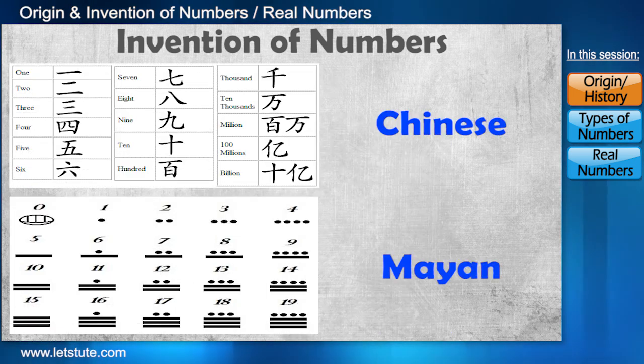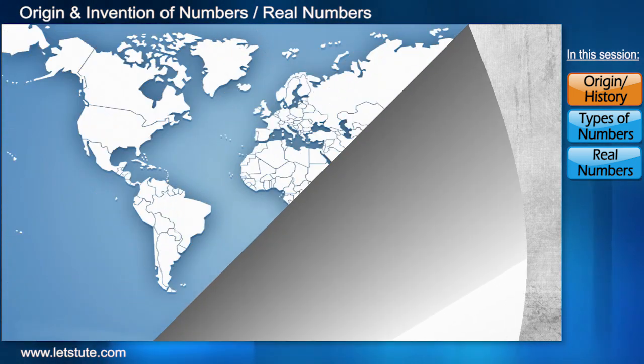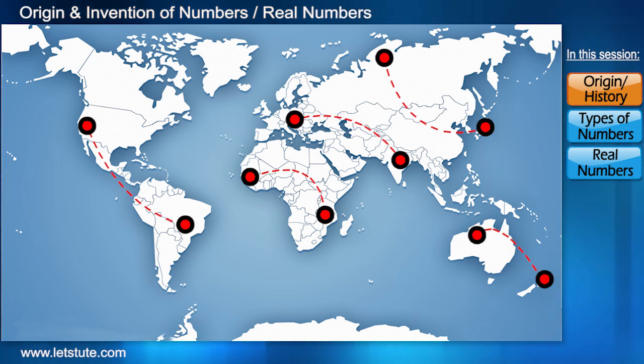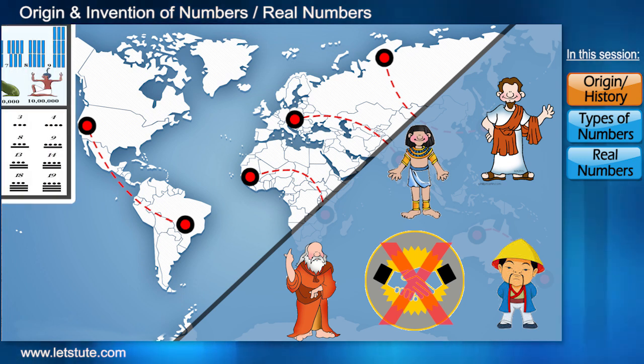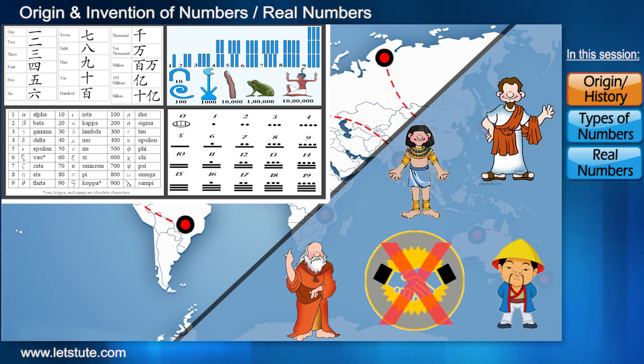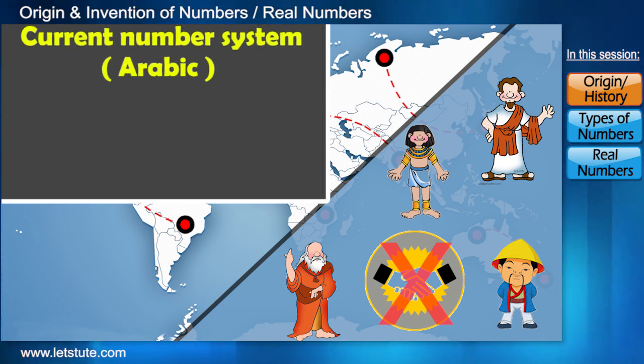Some cultures developed number systems independent from each other, or they tried to improve on an old system when it did not meet their needs. It is also said that later when they started traveling from one place to another for business, they could not deal properly because their number systems were different from each other. So finally they must have decided to stick to the current number system that we are using, which is easy to understand and universally accepted by everyone.